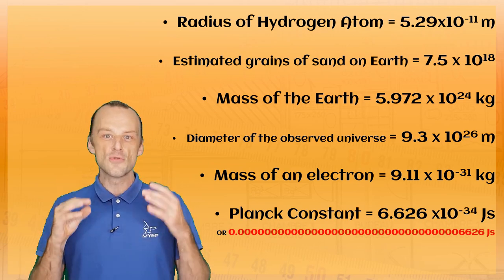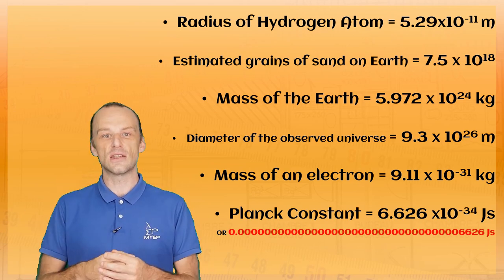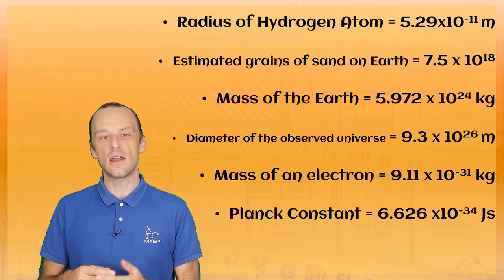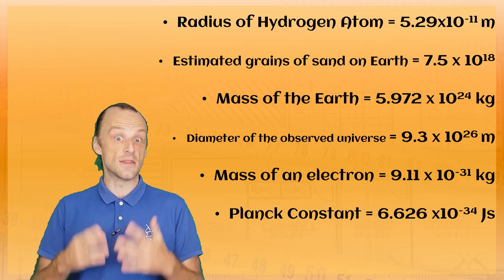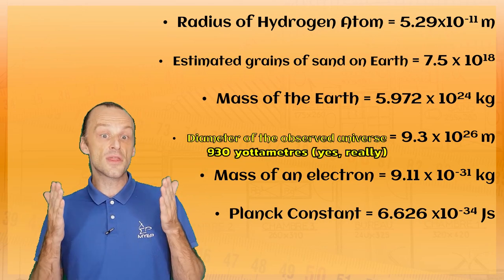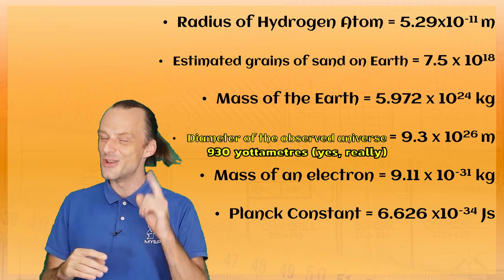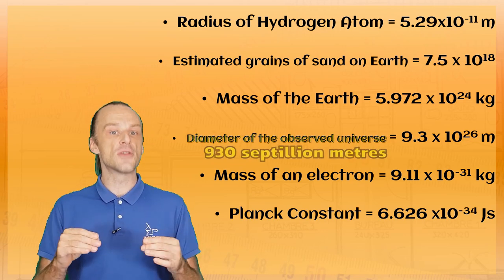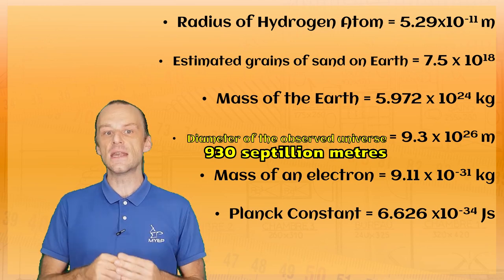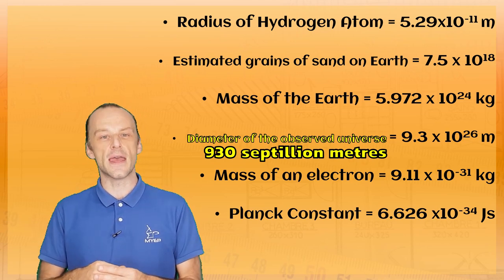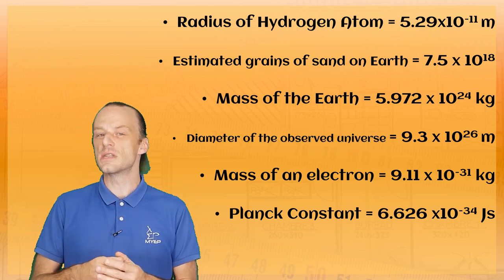You can also remember the named orders of magnitude, which you might remember from Wikipedia in an earlier slide. So you can say that the diameter of the universe is, for example, 930 Yotta meters. No, I'm not kidding about that. Or you could say that it's 930 septillion meters. But you still have to count the zeros anyway. So why not just learn to use standard form?